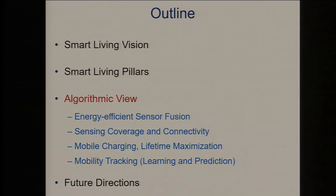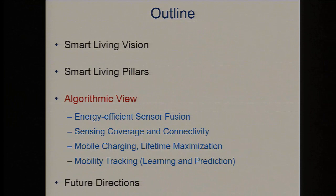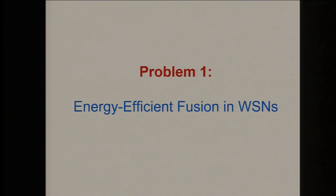Mobile charging: sensors are very power-hungry. In open field deployments for forest fire or earthquake monitoring, you may not be able to replenish the battery easily. There is a lot of research on mobile charging — a vehicle with enough charging capacity goes around and wirelessly charges the sensors. Lifetime maximization is always an issue: how do you keep the network alive for a longer time? Mobility tracking is also a problem. Many other problems are there — I'll briefly touch upon a few.